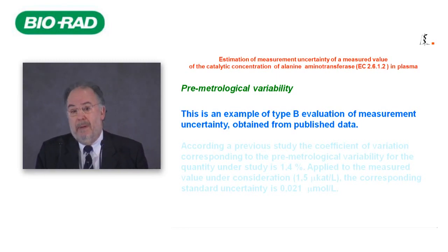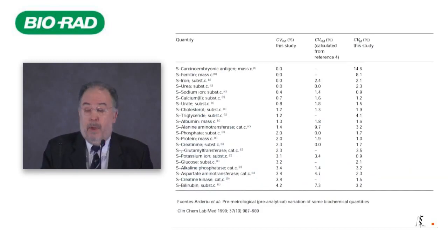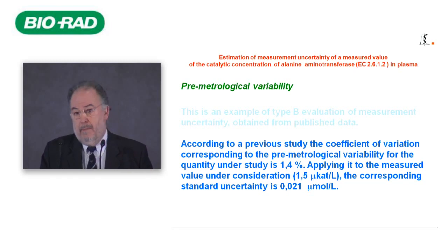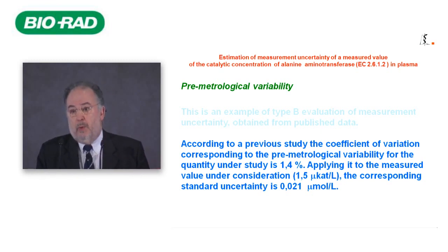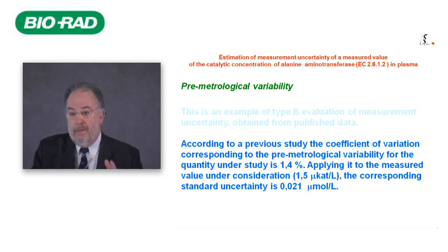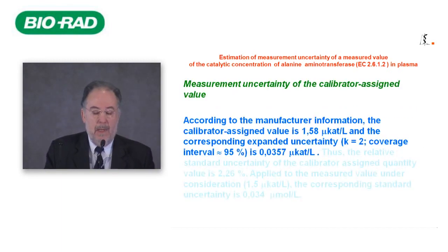Pre-analytical variability is a clear example of Type B estimation — we must search the bibliography, though there is not much bibliography about this. Looking for data on pre-analytical variability, we can find it in the bibliography and use it. We find a coefficient of variation corresponding to pre-analytical variability, apply this percentage to the measured value, and obtain the first component of the final uncertainty.